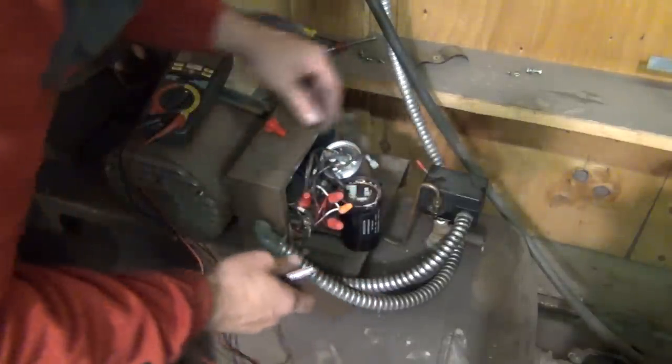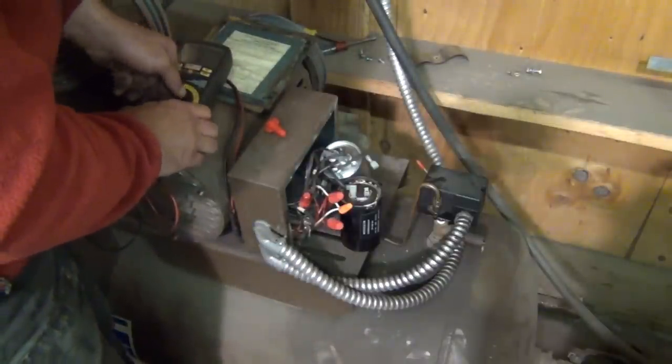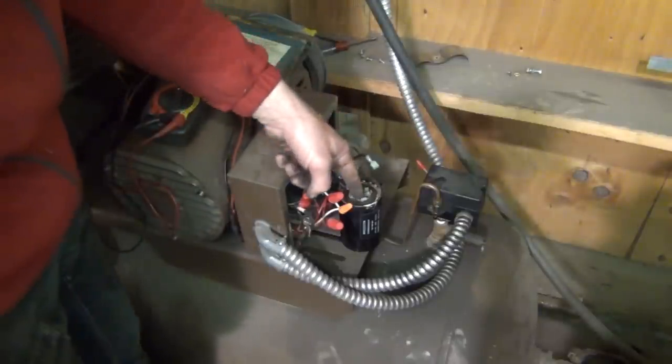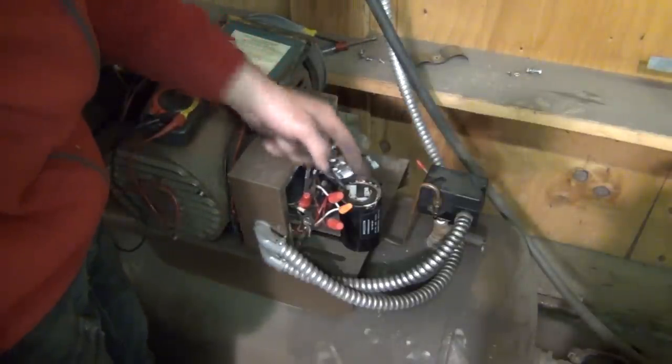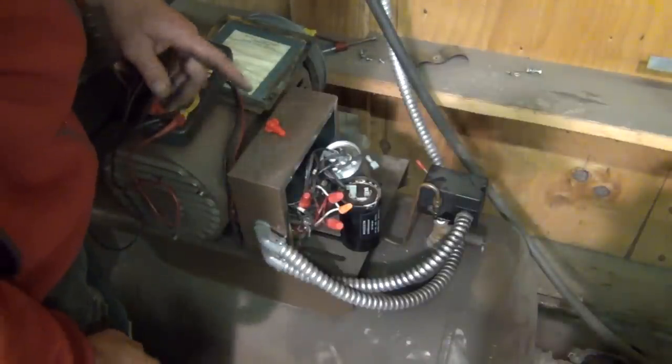We can actually verify that by setting up a temporary switch here. I'm going to go ahead and rig up a temporary switch, so I can manually put this capacitor in the start circuit, and if our motor comes up to speed, then we'll know that it's actually the inertia switch and not the capacitor.